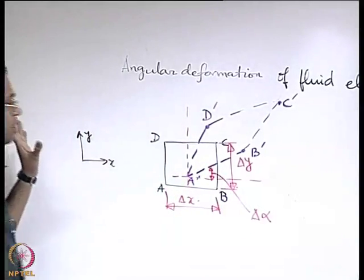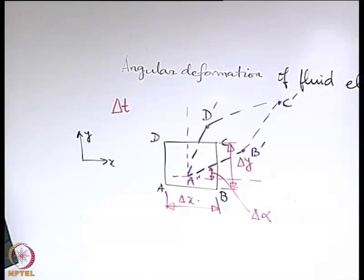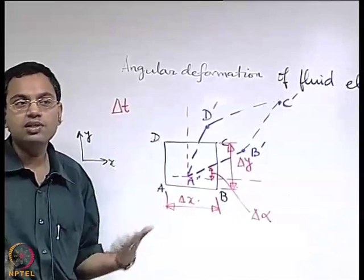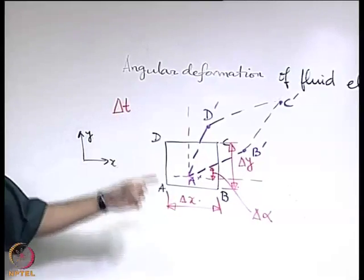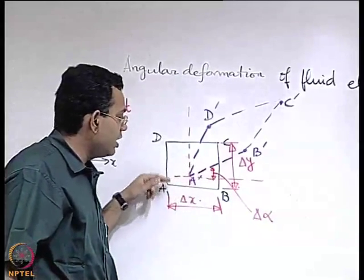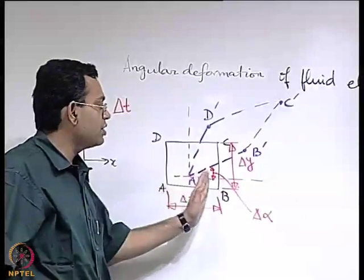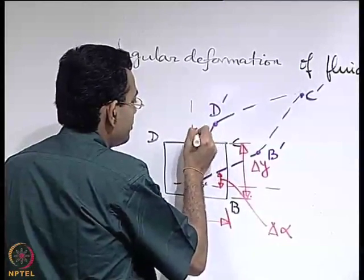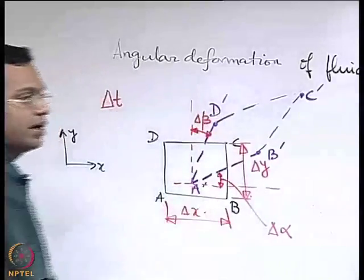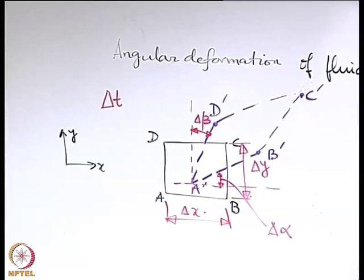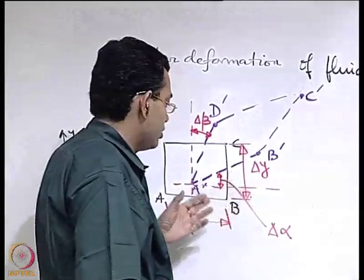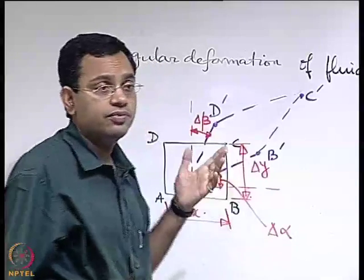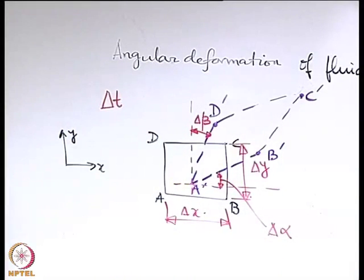We consider a small time interval delta-t within which the deformation occurs, because for large time we cannot track continuous deformation. In that small time interval, the element AB, originally oriented along x, is now oriented at angle delta-alpha with x. Similarly, we define angle delta-beta. Our objective is to quantify the time rate of change of these angles in terms of the velocity components u and v in the xy plane.